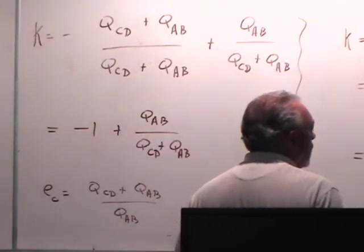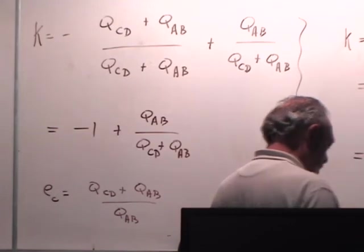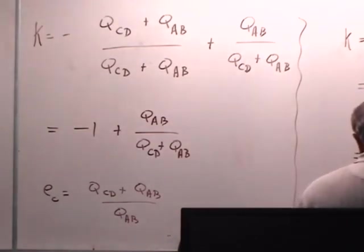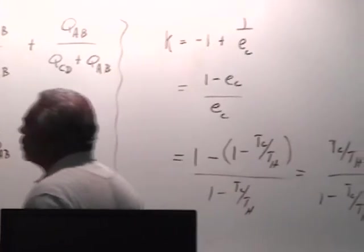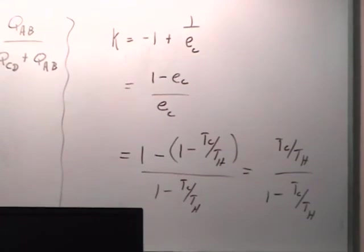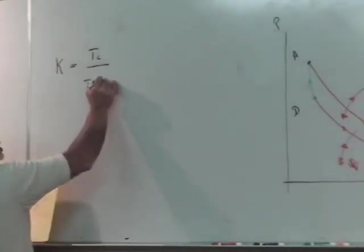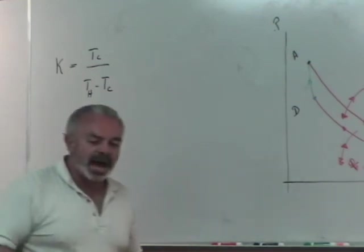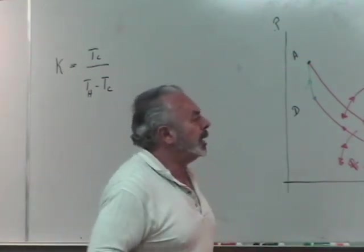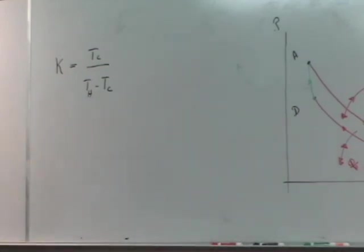Putting in for the Carnot efficiency, one minus (one minus T-cold over T-hot) divided by (one minus T-cold over T-hot). And, of course, one minus one is zero, and we have a negative T-cold over T-hot. So, when I do that, then the coefficient of performance is just simply T-cold over (T-hot minus T-cold). So, we have also a very simple expression for the coefficient of performance for a Carnot refrigerator building upon the work that we did with the Carnot engine.